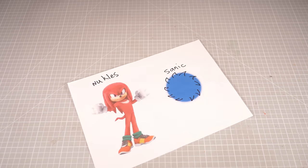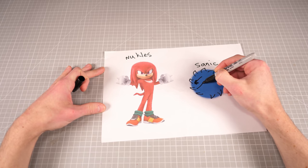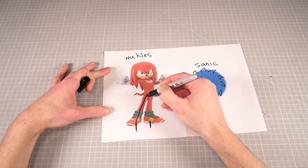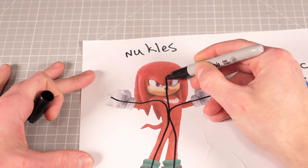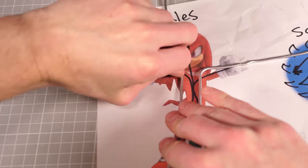Challenge accepted. Hey folks, my name is Adam and I like to make tiny nerdy things. Today I'm going to make Sonic and Knuckles. As always I'll start with an armature, but with a twist.